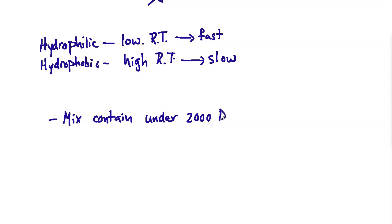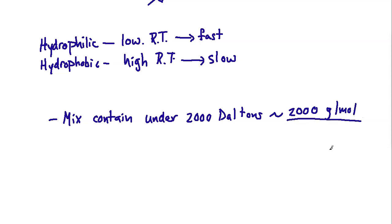When we use the term Dalton, you can equate it to a gram per mole for general purposes. So if you have compounds that are under 2,000 grams per mole, reverse phase conditions would be acceptable. That's pretty generous — all small and most medium-sized compounds can be handled by reverse phase chromatography. You may start to struggle with very complex proteins or more complicated biochemical structures, where there might be better options for characterization and separation.